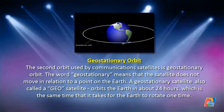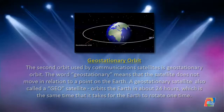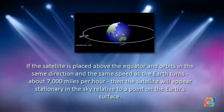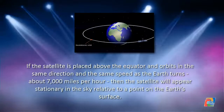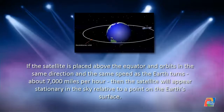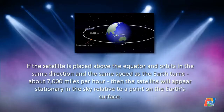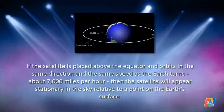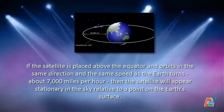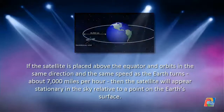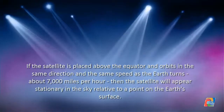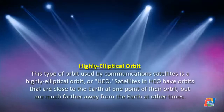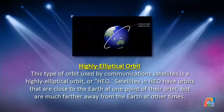A geostationary satellite, also called a GEO satellite, orbits the earth in about 24 hours, which is the same time it takes for the earth to rotate one time. If the satellite is placed above the equator and orbits in the same direction and at the same speed as the earth turns — about 7000 miles per hour — then the satellite will appear stationary in the sky relative to a point on the earth's surface.